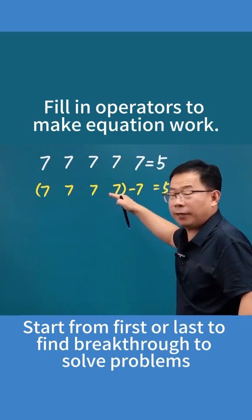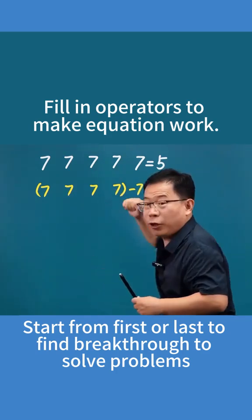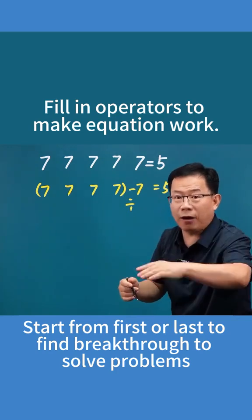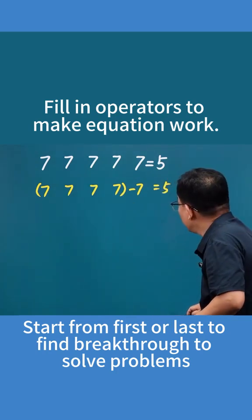If you subtract 7, then the sum of the four sevens would have to become 12. But four sevens can't become 12, so it can only be division.